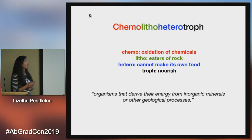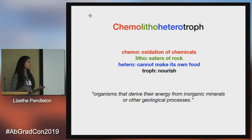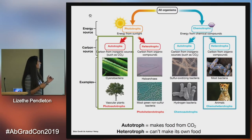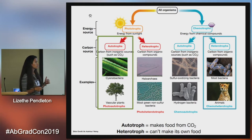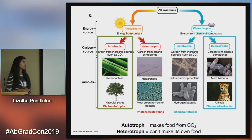Back to the word chemolithoheterotroph: chemo — oxidation of chemicals; litho — eaters of rock; hetero — cannot make its own food; troph — nourish. So chemolithotrophs are organisms that derive their energy from inorganic minerals or other geological processes. If you know the energy source and the carbon source, you can almost designate where that organism would be and the kind of environment it lives in. Autotrophs make food from carbon dioxide, and heterotrophs cannot make their own food.